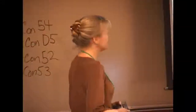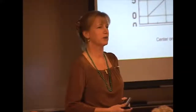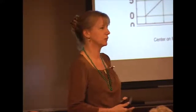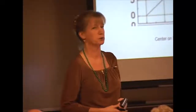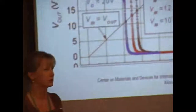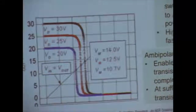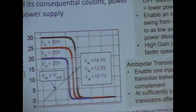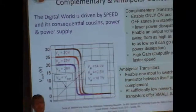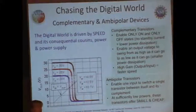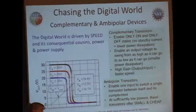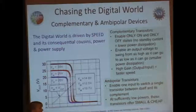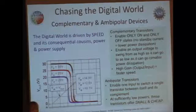If we chase the digital world — and most people will tell you that the world is digital — the natural world will remain analog, so there will always remain a role for analog circuits. The digital world is typically driven by speed, and speed has cousins: power and power supply, which determine how fast you can go.